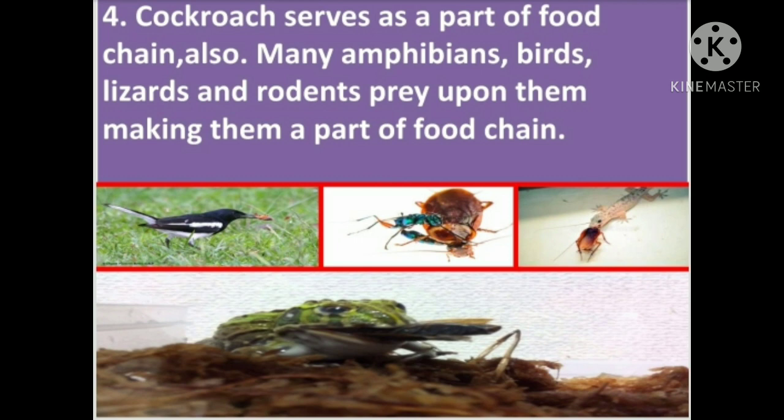Many amphibians, birds, lizards, and rodents prey upon cockroaches, meaning they attack and eat them, making cockroaches part of their food chain.